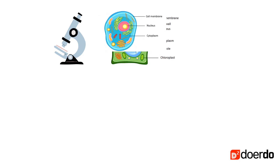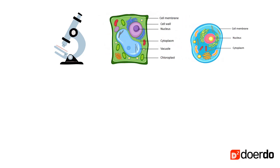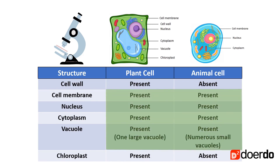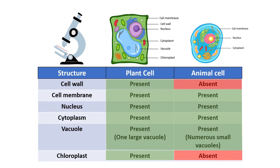Let's summarize what we learned today. We studied the cell structures — cell membrane, nucleus, cytoplasm, and vacuole — which are present in both plant and animal cells, whereas the cell wall and chloroplast are present only in plant cells and are absent in animal cells.